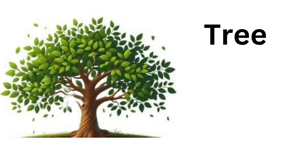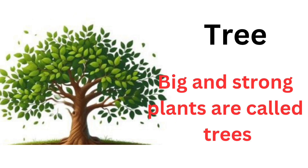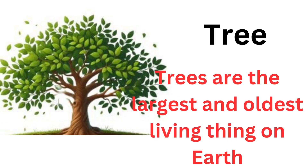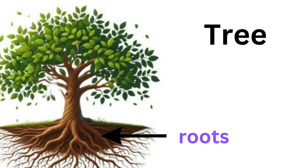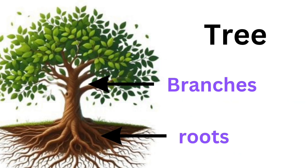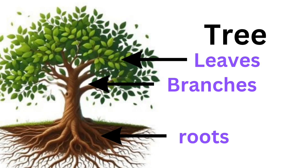Tree. Big and strong plants are called trees. Trees are the largest and oldest living thing on earth. They have roots, branches, leaves and a hard woody stem called trunk.